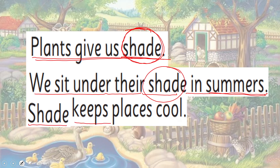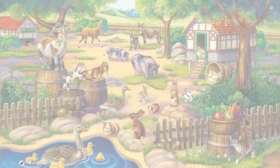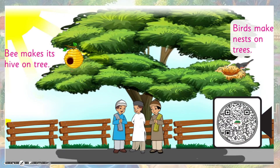Shade keeps places cool. Yaani ke saya jo hai wo mukhtalif jagaon ko thanda, yaani cool rakhta hai. Here you can see a picture of a tree — the tree has a lot of things on it. Let's quickly have a look. First, look at this — this is a beehive. Yaani ke shahad wali makkhiyon ka chatta. Usko kya kehte hain? Beehive.